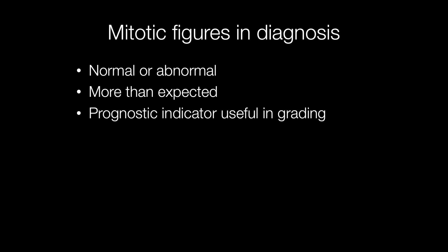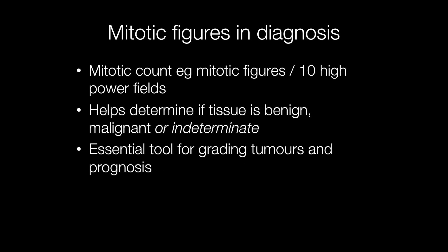Assessing mitotic figures is a really useful tool — they may be normal or abnormal, and more than expected. They are very useful as a prognostic indicator in assessing certain tumours such as breast cancer. Assessing mitotic activity needs to be standardised, and the way this is done is by counting the number of mitotic figures per 10 high power fields, using a x40 objective lens with a x10 eyepiece.